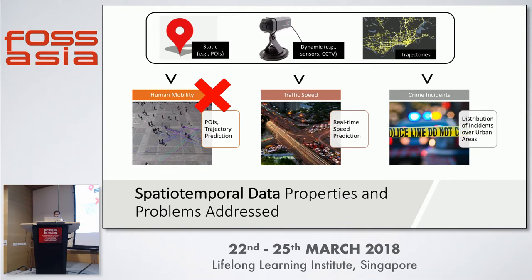The same applies to incident prediction. You have the boundary of the neighborhood, the number of buildings, the types of district — whether it's a commercial or residential neighborhood — along with population dynamics and incident types that change with day and night as well as with the seasons.